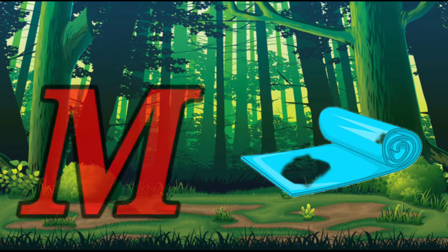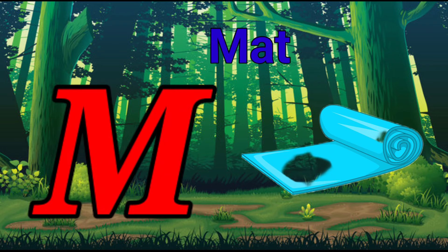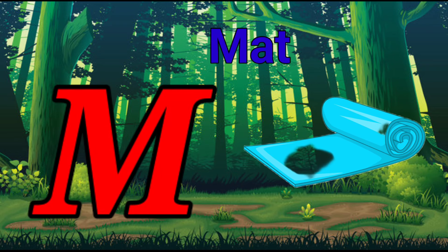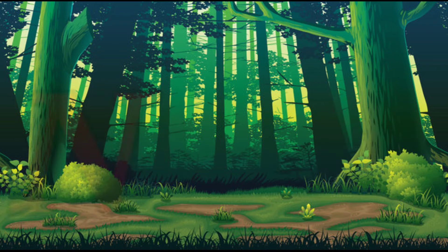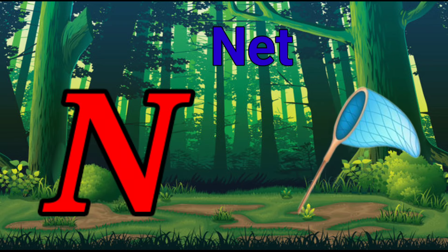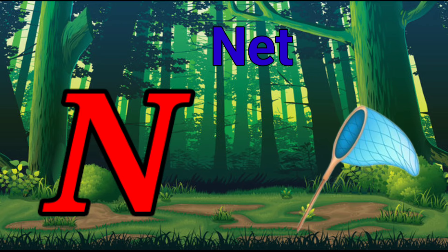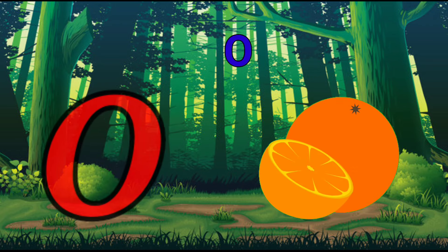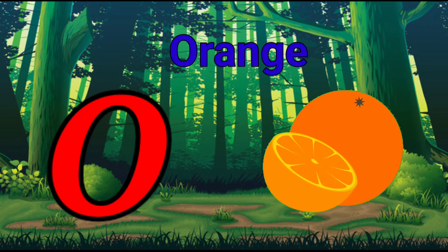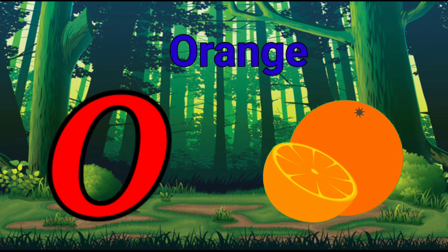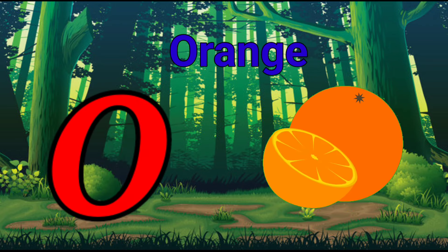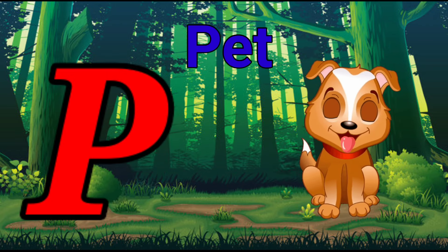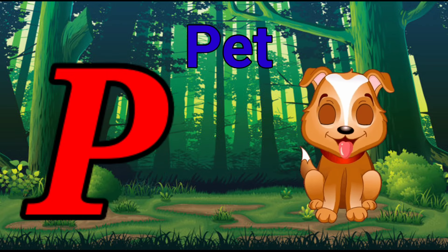M is for mat, m-m-mat. N is for net, n-n-net. O is for orange, o-o-orange. P is for pet, p-p-pet.